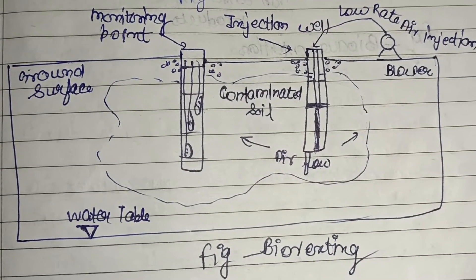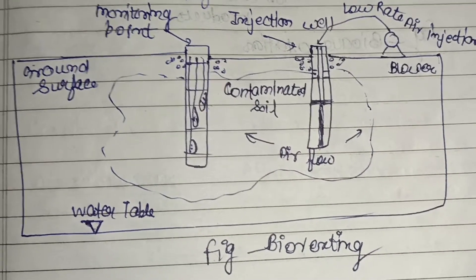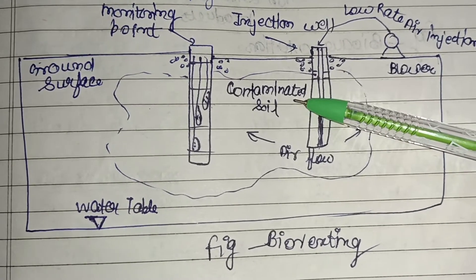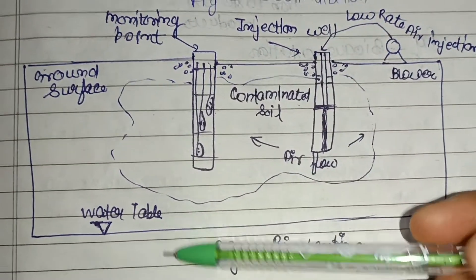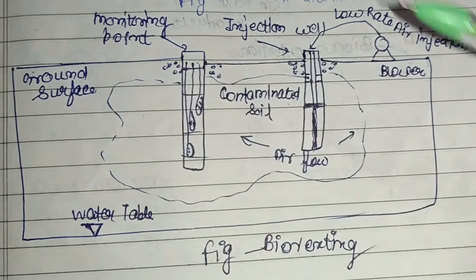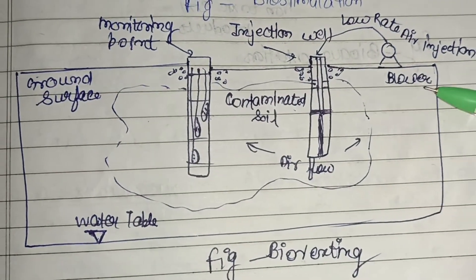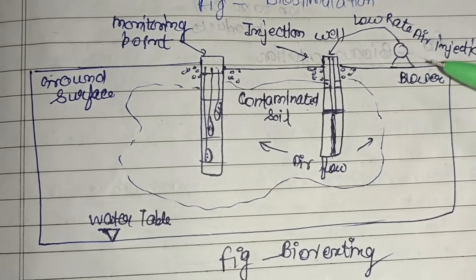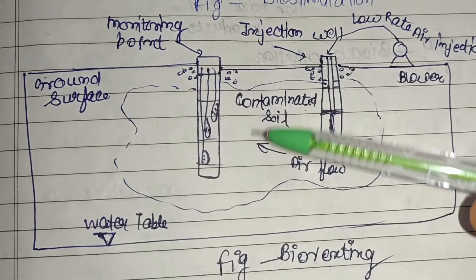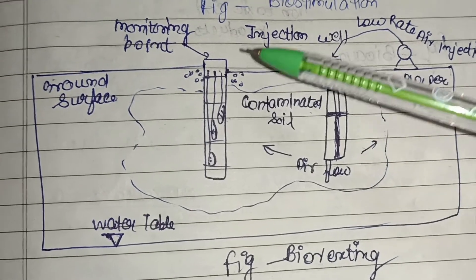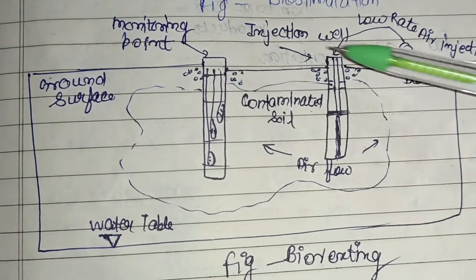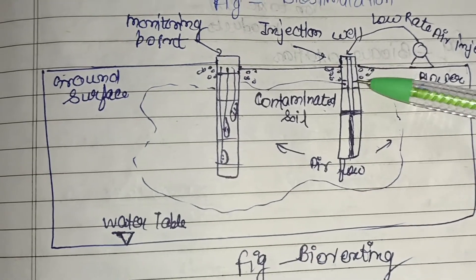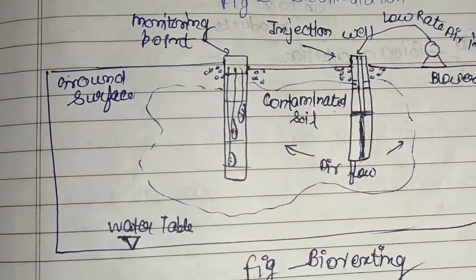This diagram represents the bioventing process. The contaminated soil area is shown with the water table beneath and the ground surface above. Air injection is provided via a blower, and airflow moves through the contaminated zone. A monitoring point is included, along with injection of nutrients required by microorganisms for their proper growth.